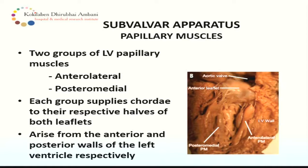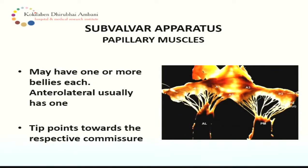Moving to the sub-valvular apparatus, which has the papillary muscles and chordae tendineae. Papillary muscles are in two groups: anterolateral and posteromedial. Each group supplies chordae to the respective half of the leaflet. Note that the anterior leaflet also has chordae from the anterolateral papillary muscle. The anterolateral papillary muscle gives chordae to both A1 and A2 segments, part of A3, and also P1 and P2 segments. The posteromedial similarly gives rise to A3 and P3 and part of A2 and P2.